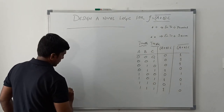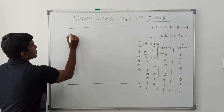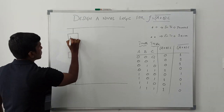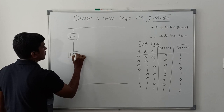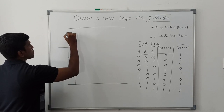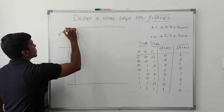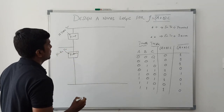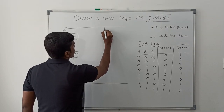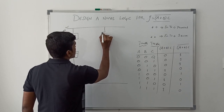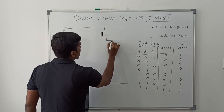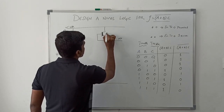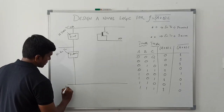Now I am going to draw the NMOS logic circuit for the given boolean expression. This NMOS logic consists of two networks: one called the pull-up network and another called the pull-down network. You get the output between these two networks. The pull-up network consists of an NMOS depletion mode transistor, and the pull-down network consists of NMOS enhancement mode transistors. The depletion mode transistor T1 is connected between VDD and the output, and this line represents VSS.